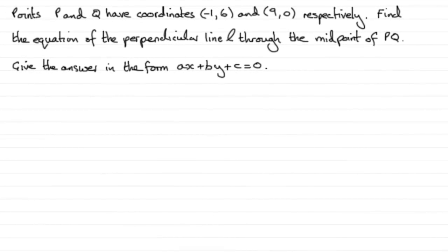Now in this question, which is worth 5 marks, we're given that the points P and Q have coordinates (-1, 6) and (9, 0) respectively.